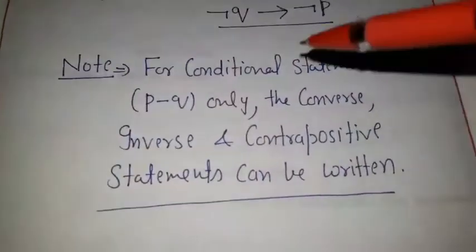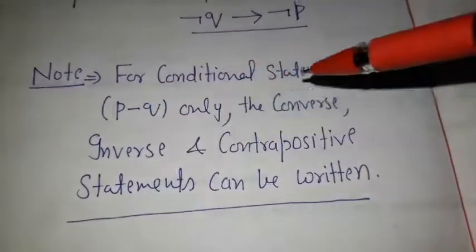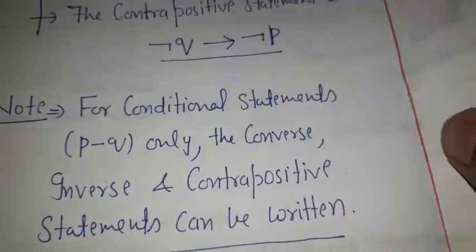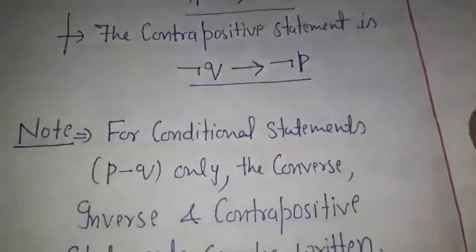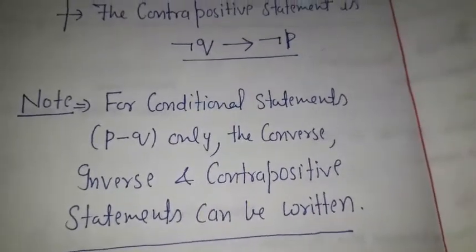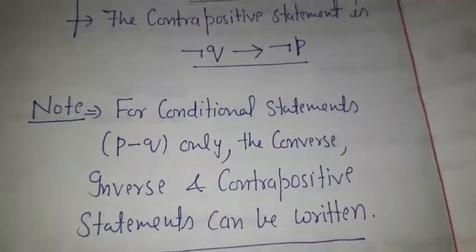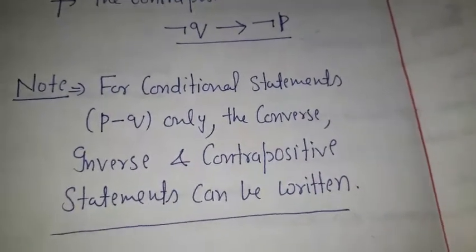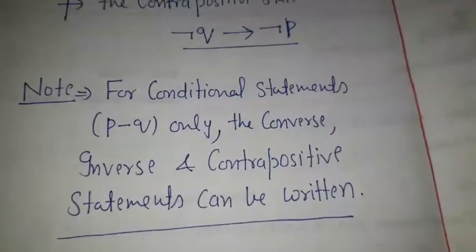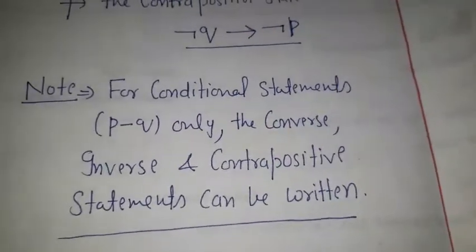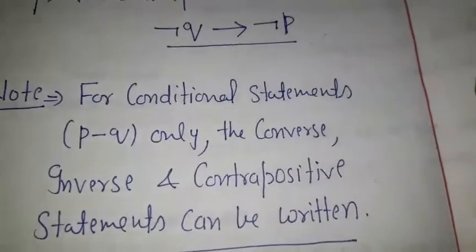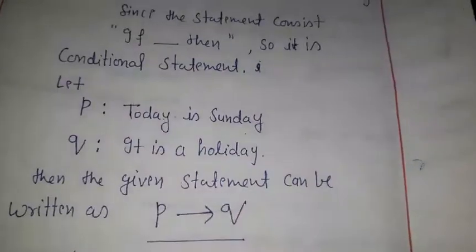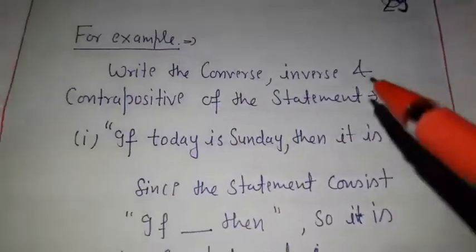Note that for any conditional statement P implies Q, only the converse, inverse, and contrapositive can be written. There are no other propositional statements for which we can define converse, inverse, or contrapositive. These are defined only for the implication, that is, the conditional statement. Now let us consider a simple example.